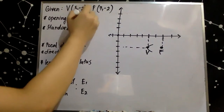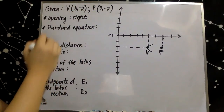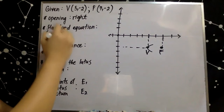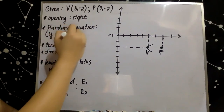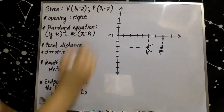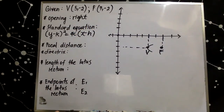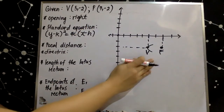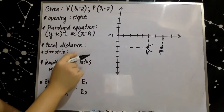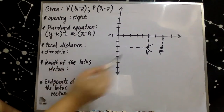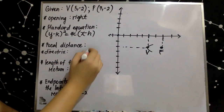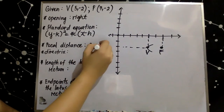Thus, our desired standard equation is: the quantity (y minus k) squared is equal to 4c times the quantity (x minus h). Based on our given graph, we can also determine the focal distance, which is the distance from vertex to focus. Thus, our parameter c is equal to 2.